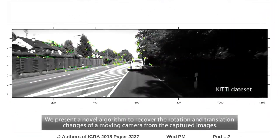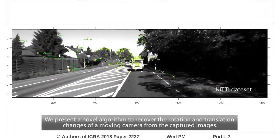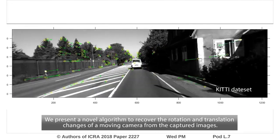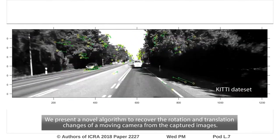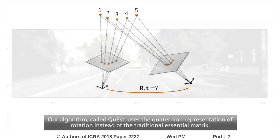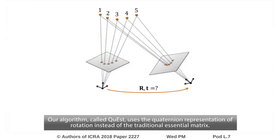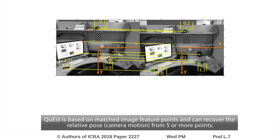We present a novel algorithm to recover the rotation and translation changes of a moving camera from the captured images. Our algorithm, called Quest, uses the quaternion representation of rotation instead of the traditional essential matrix. Quest is based on matched image feature points and can recover the relative pose from five or more points.